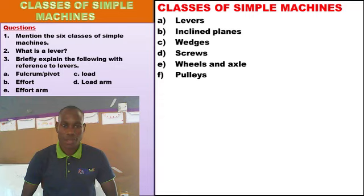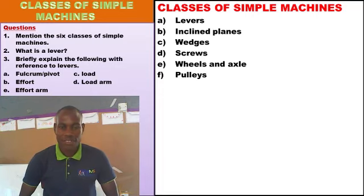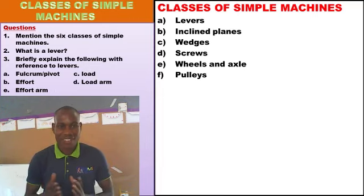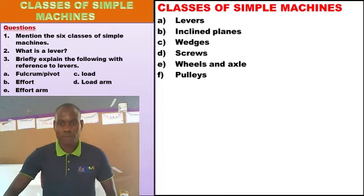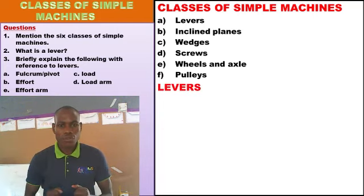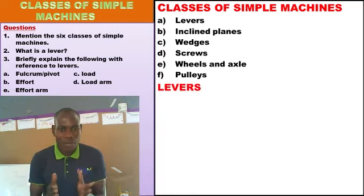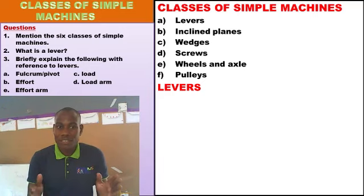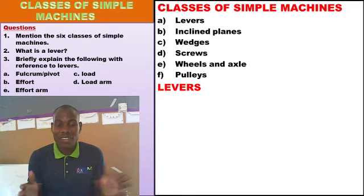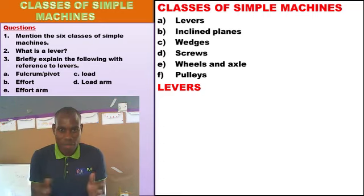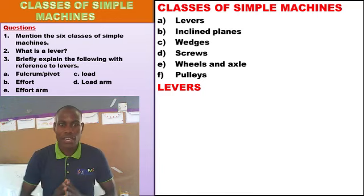Let us list them together: levers, inclined planes, wedges, screws, wheels and axle, and lastly pulleys. We are going to look at only one of those groups today. We cannot learn all of them at one time because it takes a couple of days to cover them all. So we are going to look at only levers.